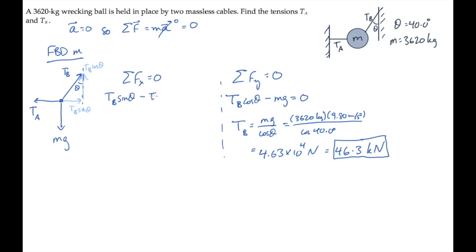Subtracting tension in cable a and setting the sum equal to zero tells us that tension in a is tension in b times sine of theta. Substituting the values and calculating finally gives us 29.8 kilonewtons.